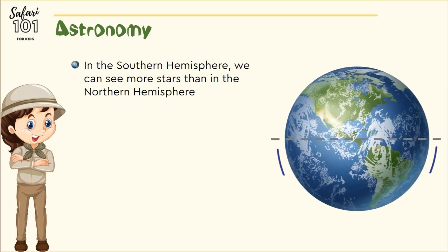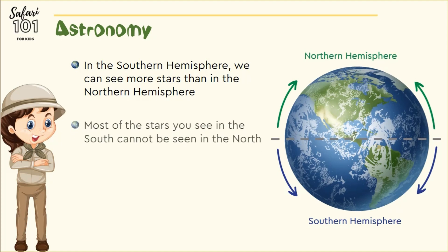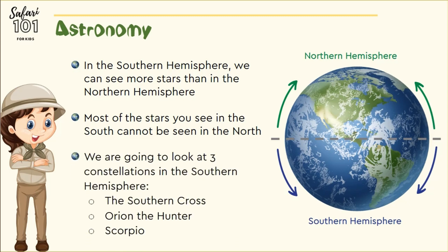If you are in the southern hemisphere, you can see more stars than in the northern hemisphere. Most of the stars you can see in the south you can't even see in the north. The reason is because of the way the Earth turns. We are going to look at three constellations that we can see in the southern hemisphere: the Southern Cross, Orion the Hunter, and Scorpio.